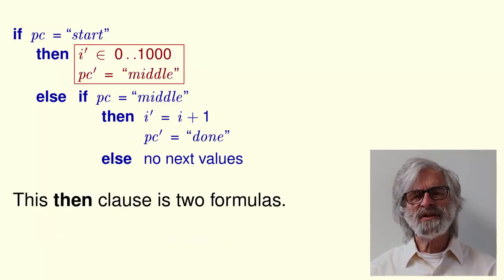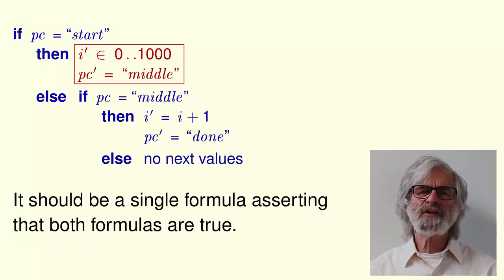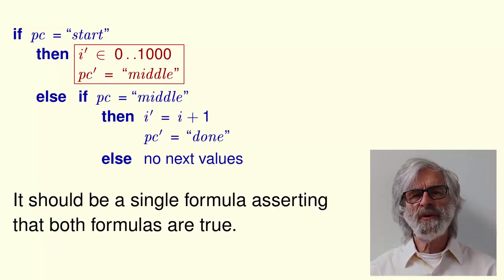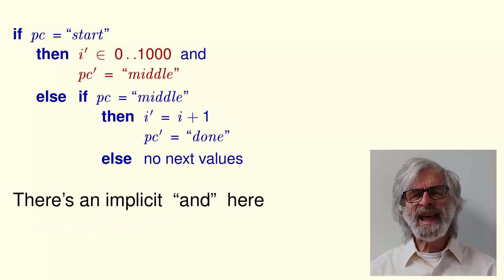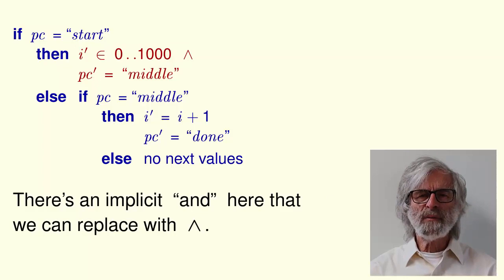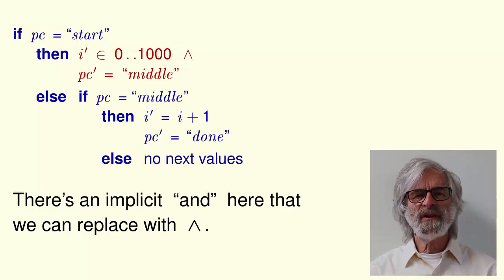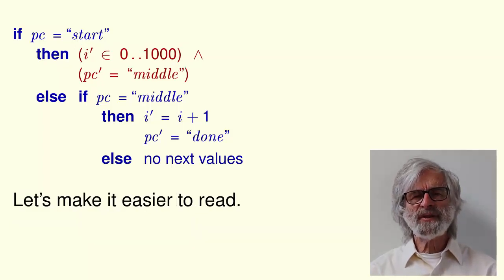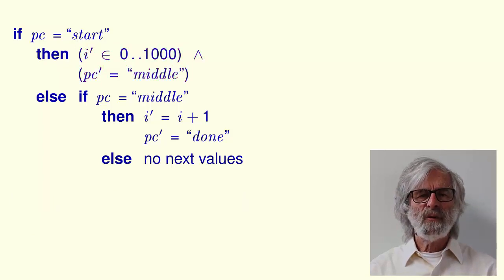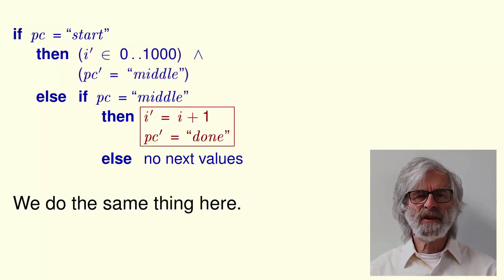This then clause consists of two separate formulas. It should be a single formula asserting that both formulas are true. There's an implicit AND here, and we know how to write AND in math. We replace it with this conjunction symbol. Let's add some parentheses to make it easier to read. We do the same thing with the second THEN clause.